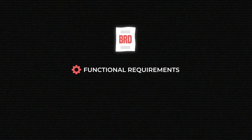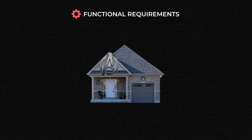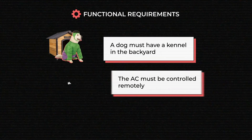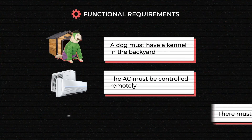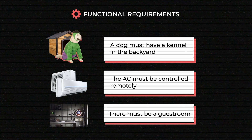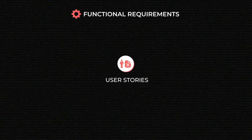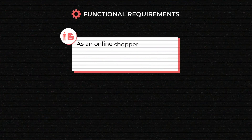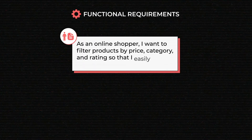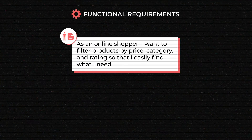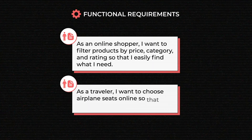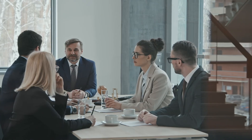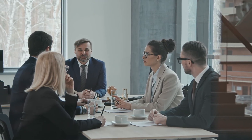In the BRD, the Product Scope is defined in the Functional Requirements section. For the house design, some requirements can be: a dog must have a kennel in the backyard, the AC must be controlled remotely, or there must be a guest room. The functional requirements for software often come in the form of user stories, sketching interaction scenarios and user flows — for example, 'As an online shopper, I want to filter products by price, category, and rating so that I easily find what I need,' or 'As a traveler, I want to choose airplane seats online so that I sit with my friends.' As you prepare the list of requirements, it's worth talking to different stakeholders to get diverse perspectives.